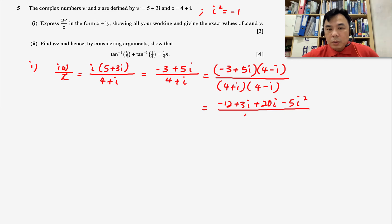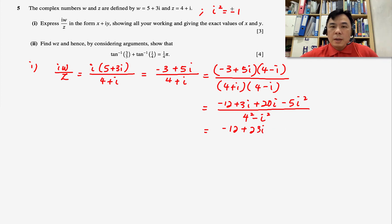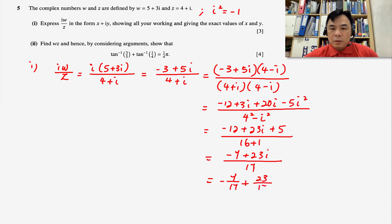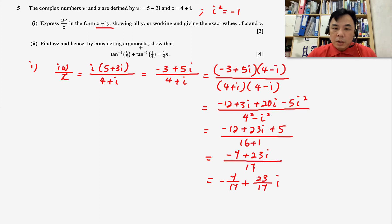For the denominator we can use the difference of squares formula: 4² − i², which gives 16 + 1 = 17. In the numerator, 5i² becomes −5, so we get −12 − 5 + 23i = −7 + 23i. Therefore iw/z = (−7 + 23i)/17, which we write as −7/17 + (23/17)i. These are the exact values of x and y.